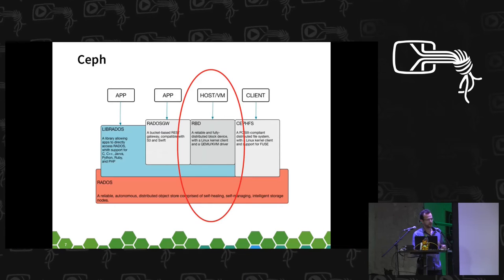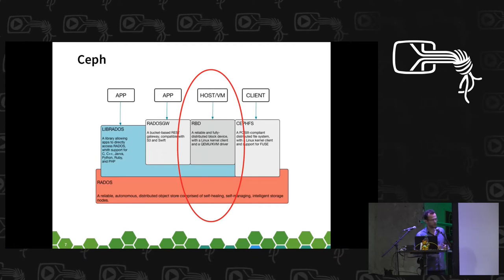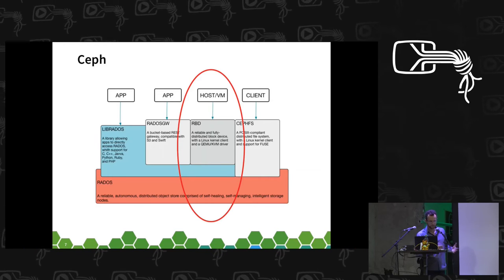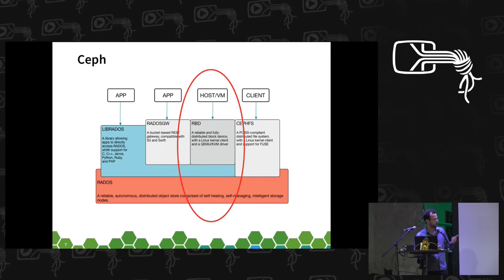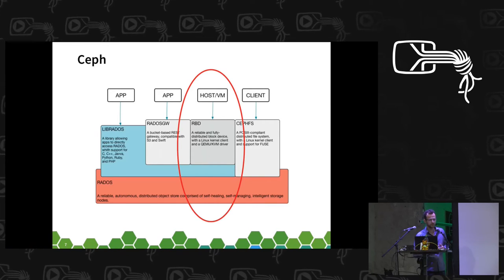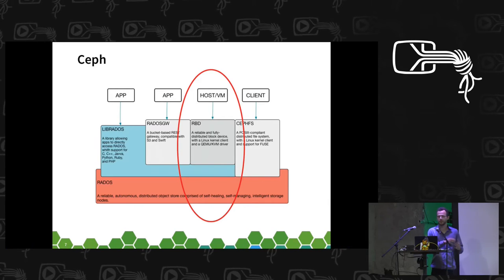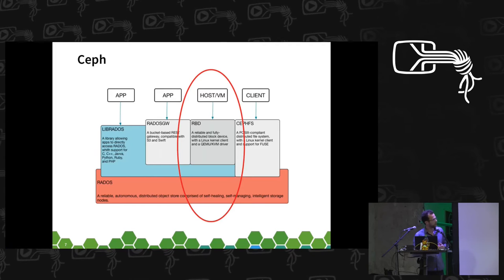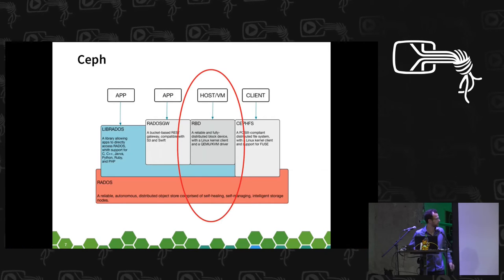On the user access side, Ceph is generally broken up into three main protocols or components. On the left is the Rados gateway, which supports RESTful protocols — Amazon S3 or OpenStack Swift. Then we have the Rados block device interface, which is what I'm using for this project. And on the right there's the Ceph file system, which is a POSIX file system on top of the Ceph object store.